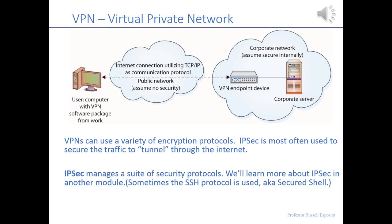The security protocol used is called IPsec. VPNs use a variety of encryption protocols — mostly IPsec, the most common one. It's really a suite of protocols doing a number of different security things. There's also another protocol called SSH — Secure Shell — which is less common but could be used in a VPN. More often than not, the IPsec protocol is used probably 95% of the time, and we'll look into it more deeply in another module.